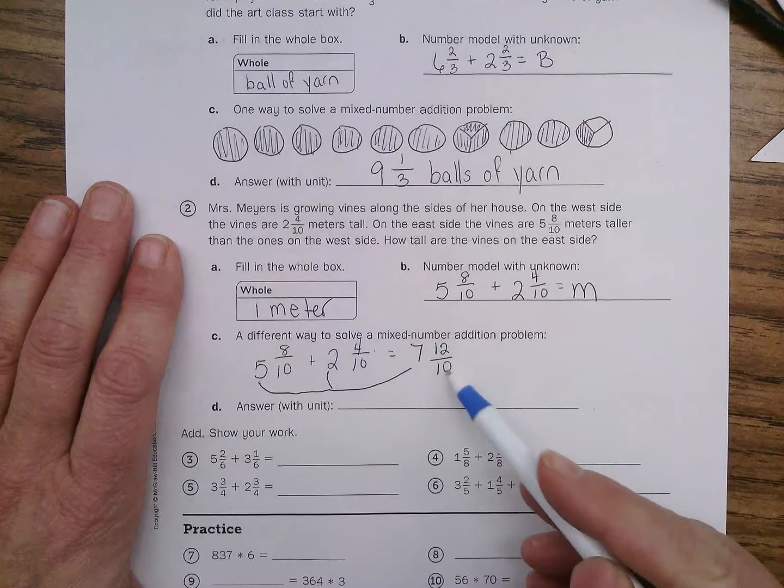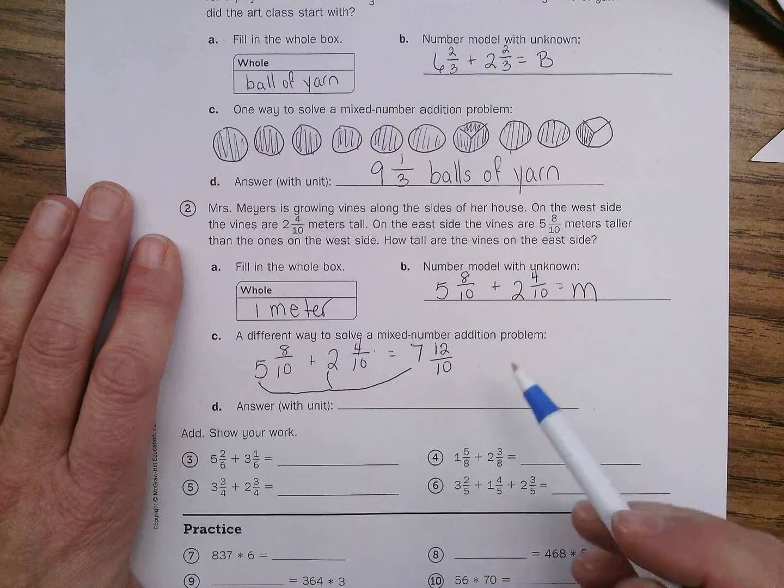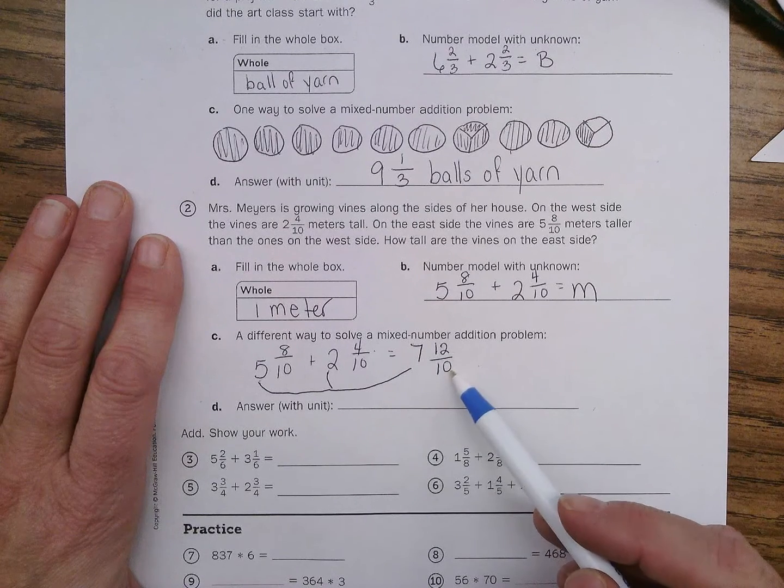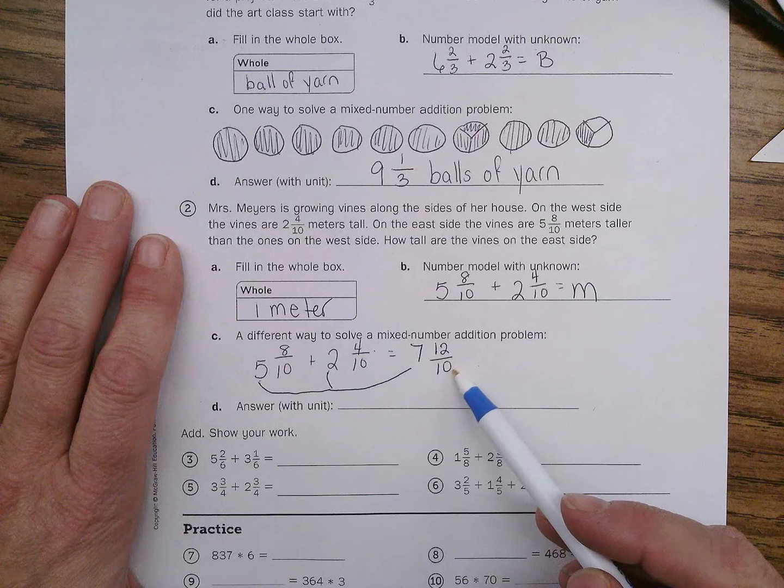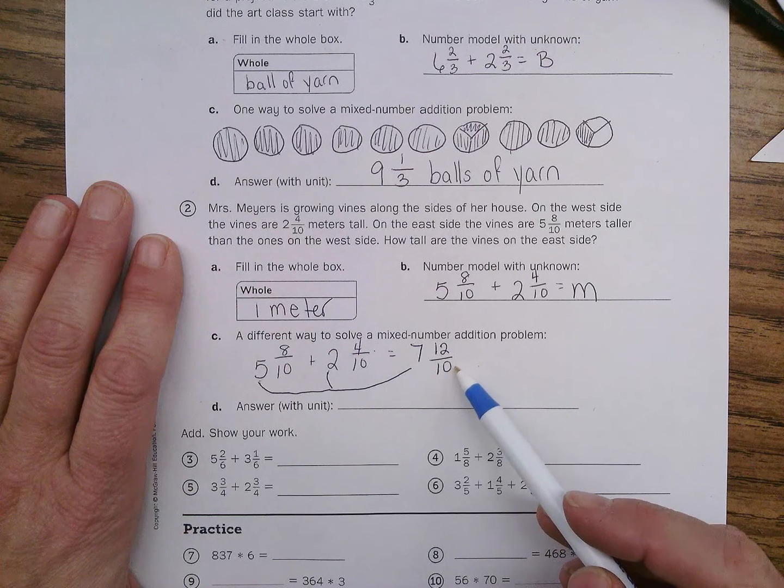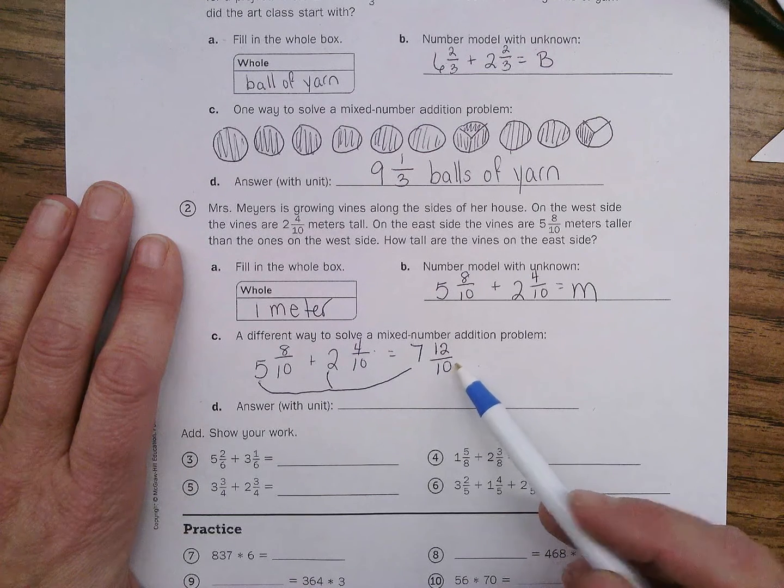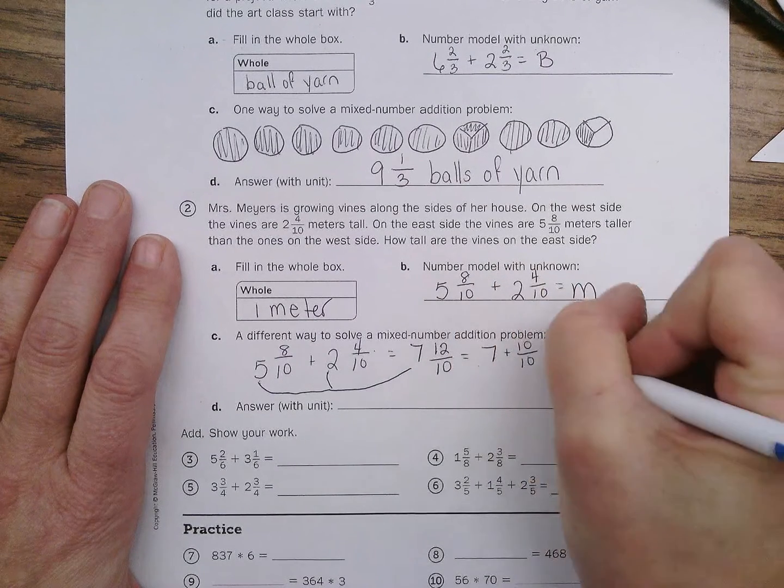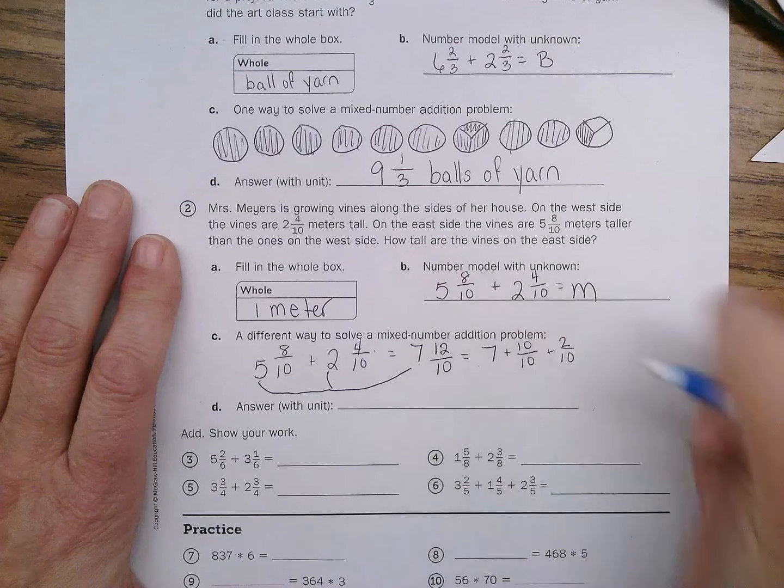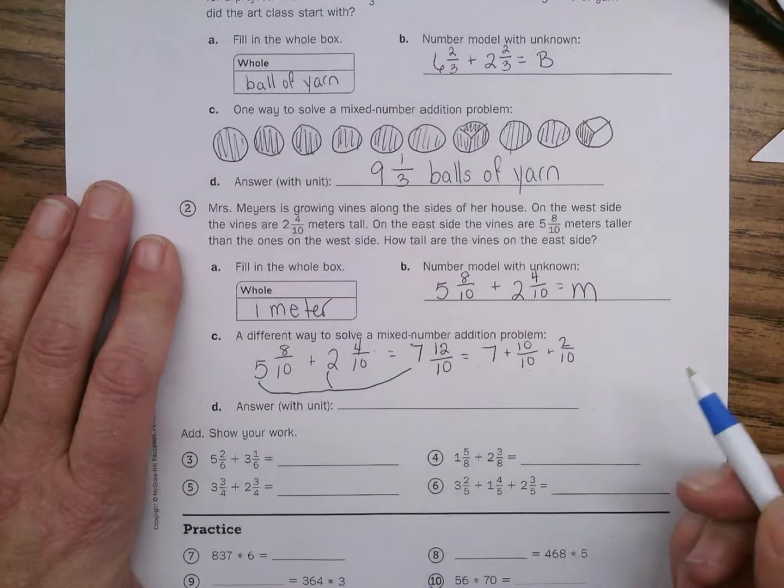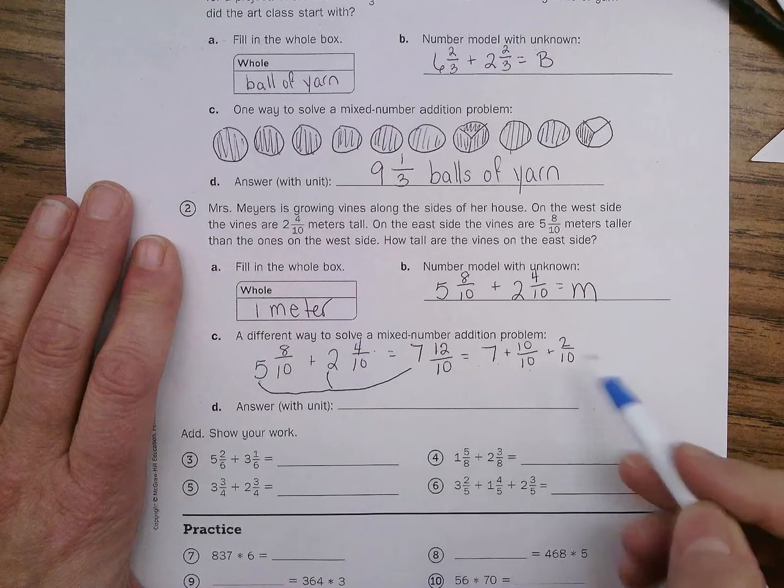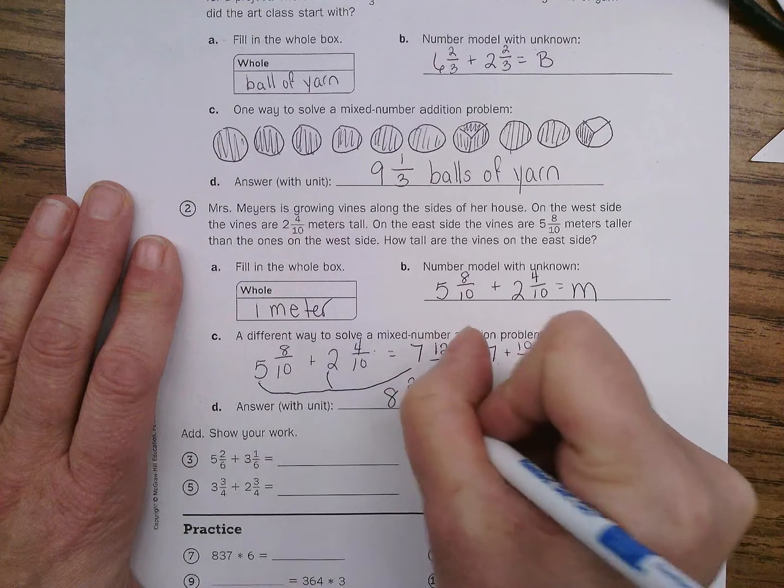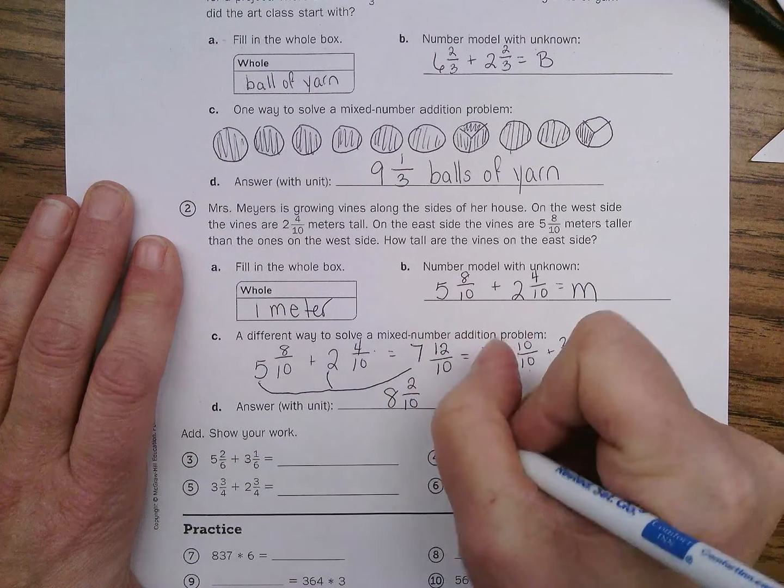But, look, twelve-tenths, that's an improper fraction. Remember we talked about that today? So, how many tenths makes another whole? Ten-tenths. Ten-tenths makes another whole. So, this equals seven plus ten-tenths plus two-tenths. That equals one, right? So, seven, eight, eight and two-tenths meters.